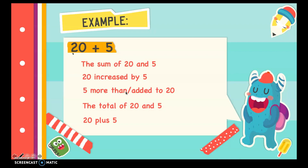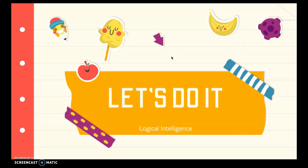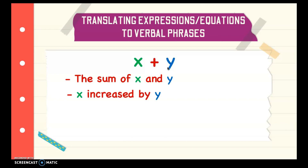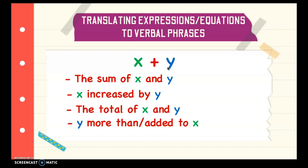So in translating algebraic expressions or equations to verbal phrases, you can say it in many ways, since the plus symbol or any other operations can be associated with different words. Let's have more examples. For x plus y, we can say the sum of x and y. We can also say x increased by y. The total of x and y. We have y more than, or added to x. Or simply, x plus y.